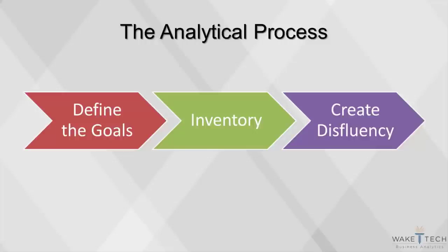Simply observe the data files and write down a list of observations, questions, and any other ideas you have. This process, called creating disfluency, enhances the data dictionary and helps the analyst internalize elements of the data. Cognitive disfluency is the principle that enables students who take lecture notes by writing to retain more of the material than students who type notes, even though those who type can take notes more efficiently. Sometimes the more work we have to do to process the information, the better we can understand it. Using this principle at the beginning of a project, before using any advanced analytical techniques, enhances the analyst's capability to understand the data.